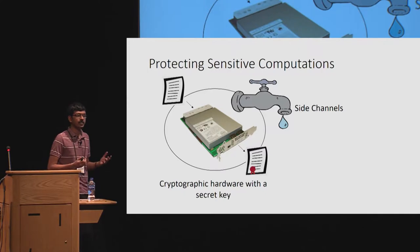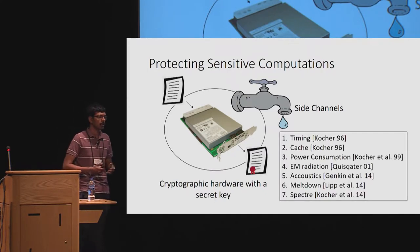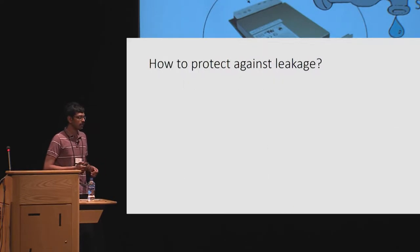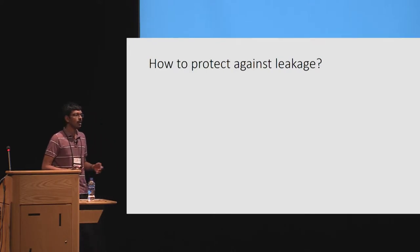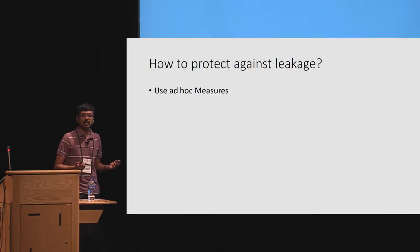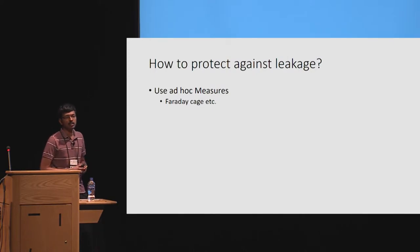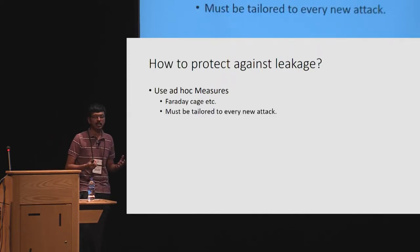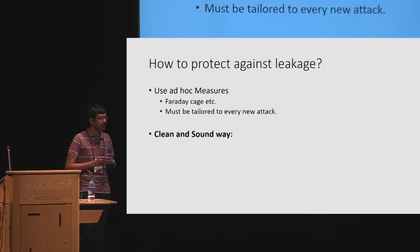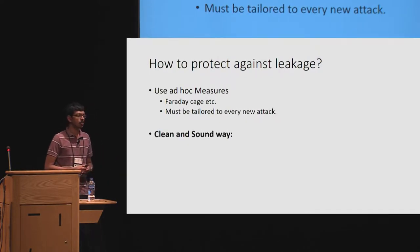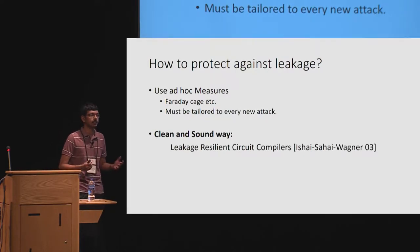These class of attacks are called side channel attacks, and there has been a lot of work in our community studying specific side channels. The question we would like to answer is: how do we protect our sensitive computations against leakage from these side channels? One way is to use ad hoc measures — for example, using a Faraday cage to protect against electromagnetic radiation leakage. However, a major drawback is that for every new kind of attack, you must come up with a new countermeasure, and this is usually infeasible in practice. A theoretically sound way to protect against side channel leakage is to use a primitive called leakage-resilient circuit compilers.